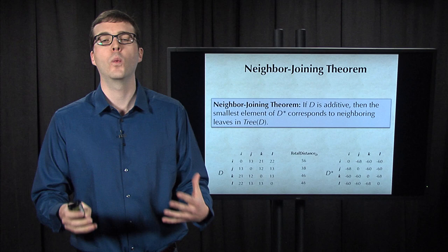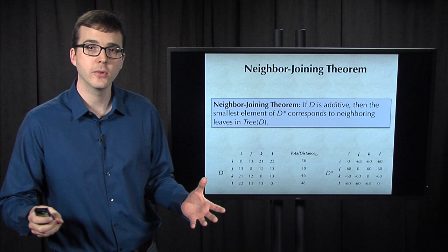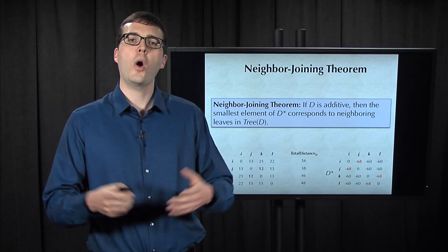Now, if we use D* instead of D, then we will be able to successfully identify a pair of neighbors from a minimum element of the matrix. So let's walk through the neighbor-joining algorithm.